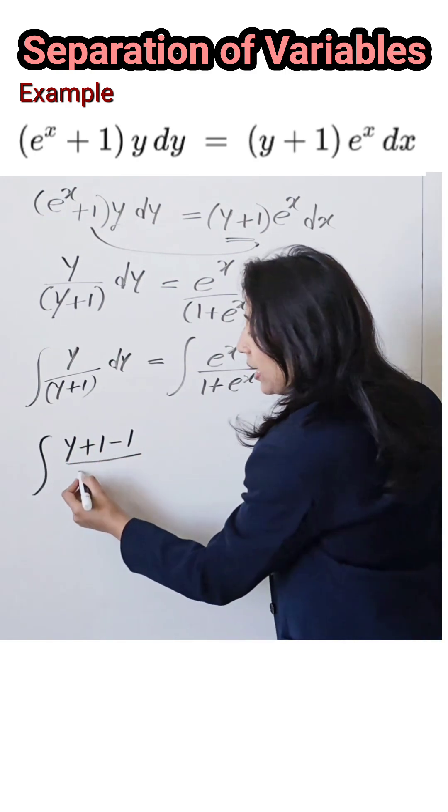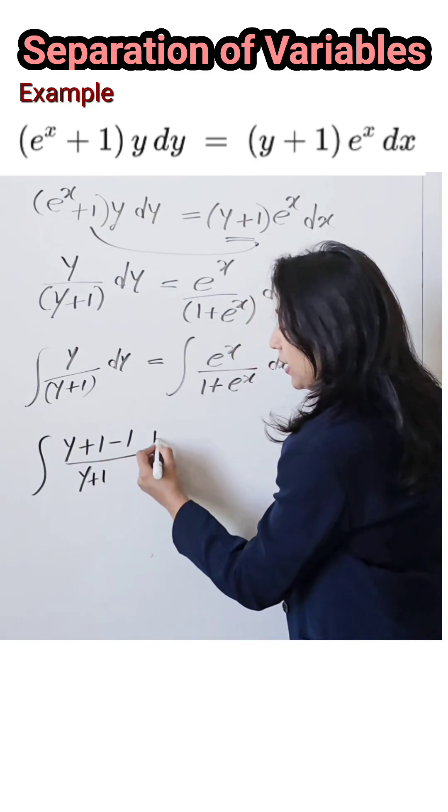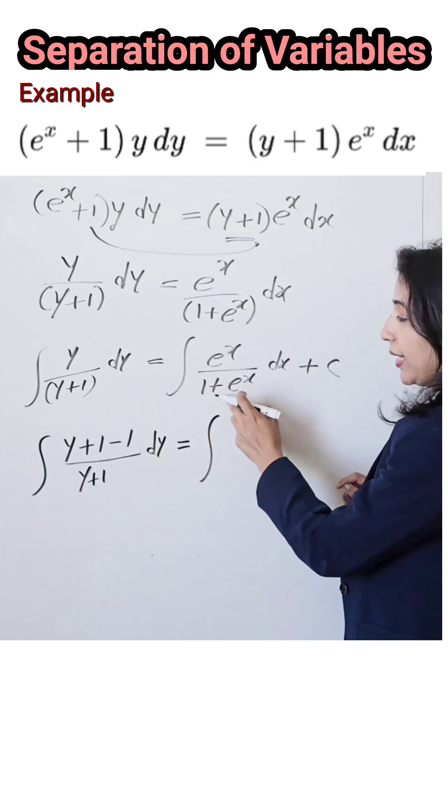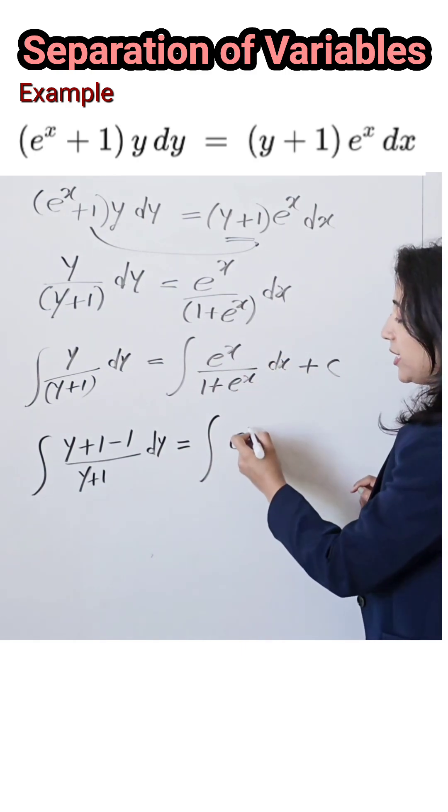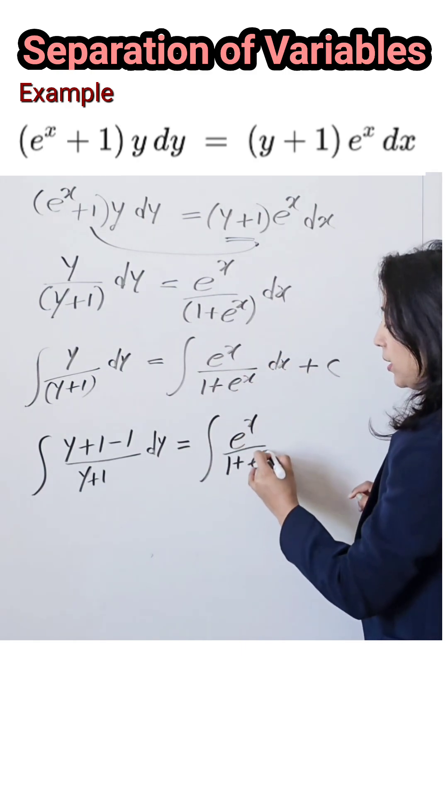Equal to, here derivative of denominator is present in the numerator, so no need to adjust. Just write down the term as it is. And the next step, I will solve the integration.